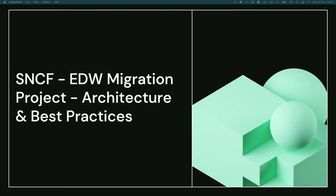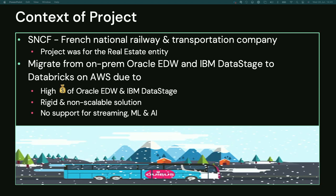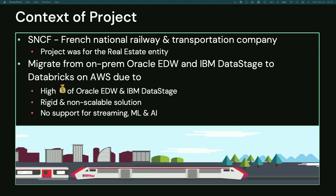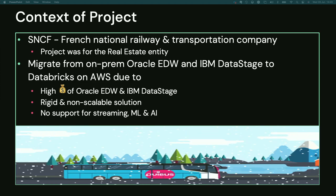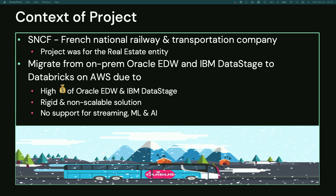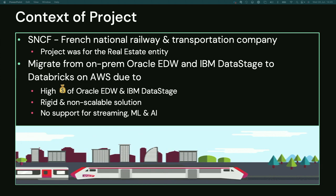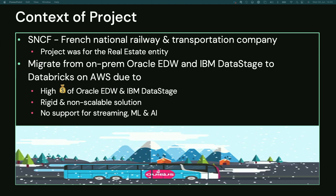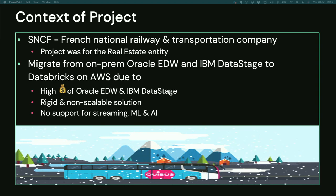That completes the first part. Now Imanshu will speak about the SNCF project. SNCF is the French National Railways and Transportation Company. This project was for the real estate entity of SNCF. They had been using Oracle Data Warehouse and IBM Data Stage for ETL for quite a while and wanted to move away because these solutions are costly and they didn't want to renew the licenses. Secondly, these solutions are not scalable — adding more compute to an on-premise data warehouse is difficult. Lastly, they do not support streaming, machine learning, or AI use cases. That's why they chose Databricks on AWS.